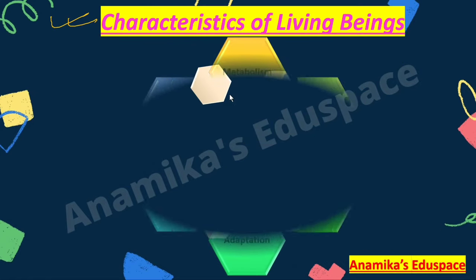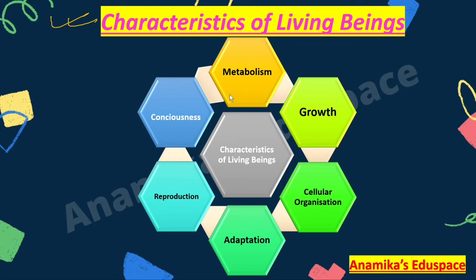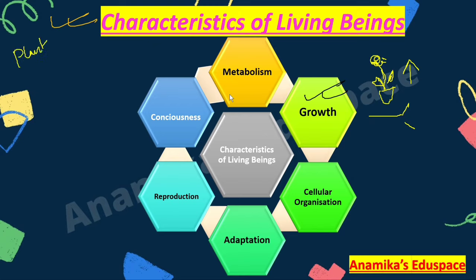Here are the characteristics of a living being in their simplest form. Growth is the main character — living beings always grow in size. If you plant a plant today, you will see leaves coming out and growth at the shoot apex. Plants grow all over their lifetime, whereas animals grow only up to a certain age. This phenomenon is termed growth.